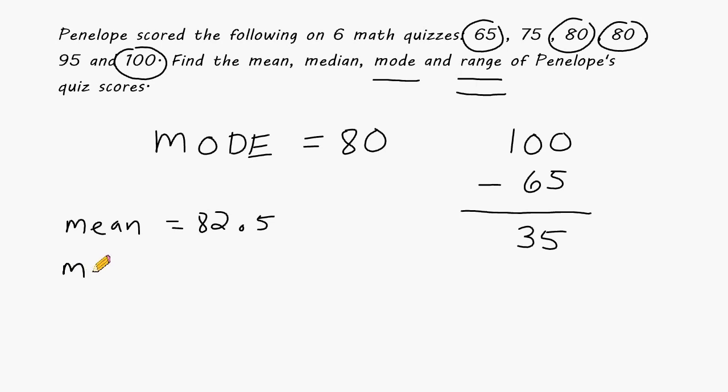The median quiz score is 80. And to find the median, you have to take all of the numbers, make sure they are placed in order, and just find the middle value. The mode of our data set is also 80. And the range of our data set is equal to 35. And the range is found by subtracting the smallest value in your data set from the largest number in your data set.